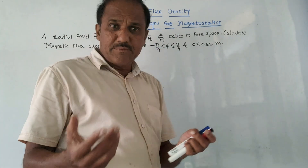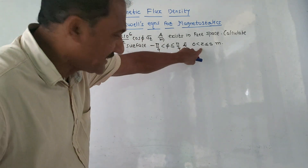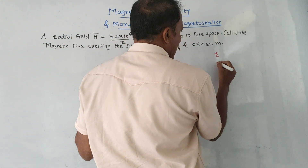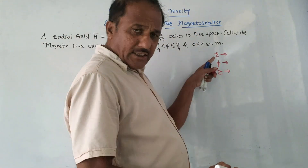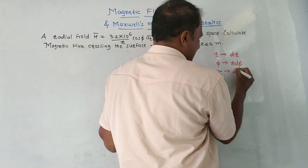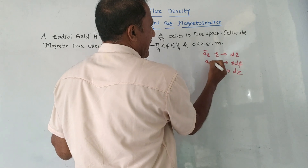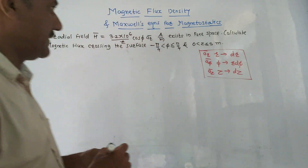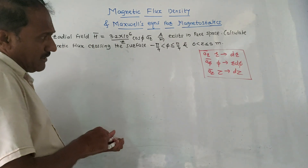First, select the coordinate system. Looking at the given coordinates, they contain r, φ, and z — these are related to the cylindrical coordinate system. In cylindrical coordinates: variation in r is dr, variation in φ is r dφ, variation in z is dz, with directions a-r bar, a-φ bar, and a-z bar respectively. We will use the cylindrical coordinate system.